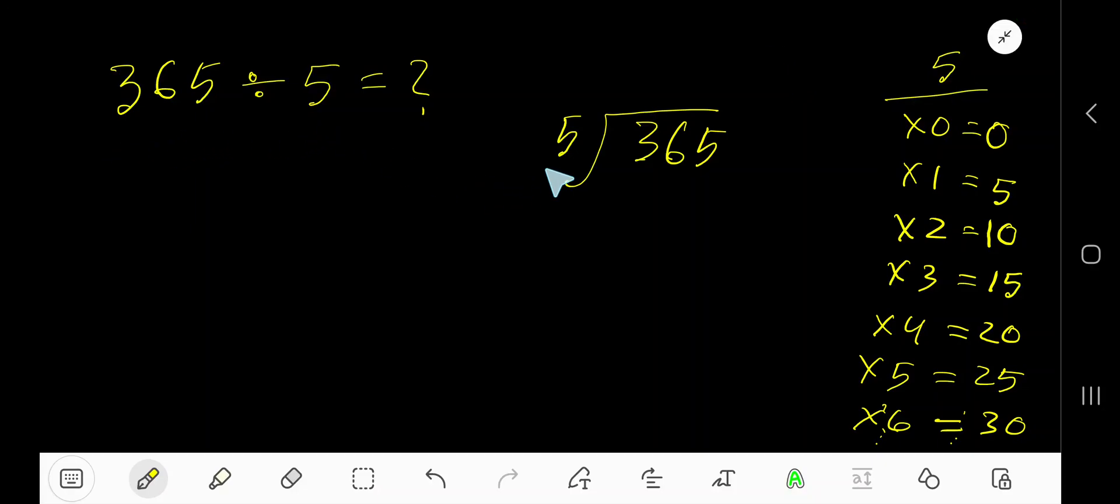365 divided by 5. Here 5 is a divisor, so we need the multiplication table of 5. 5 times 0 is 0, 5 times 1 is 5, 5 times 2 is 10, 5 times 3 is 15, 5 times 4 is 20, 5 times 5 is 25, 5 times 6 is 30. To find the multiplication table of 5, just add 5 with the previous step.